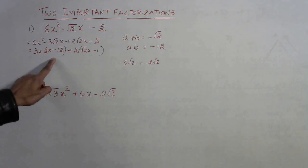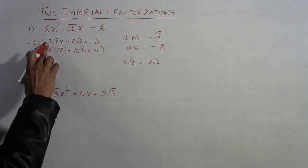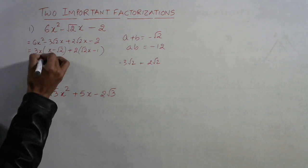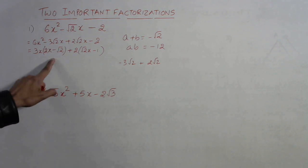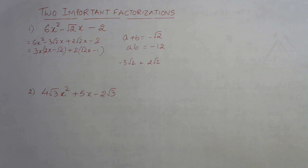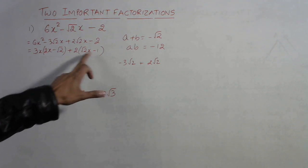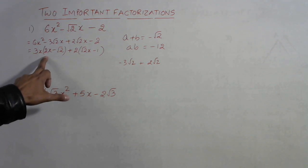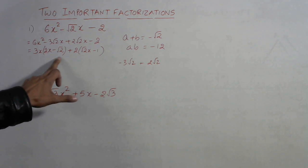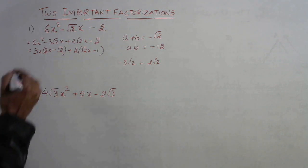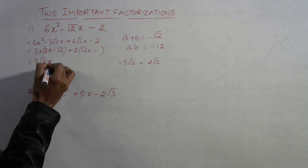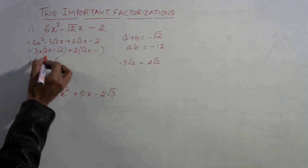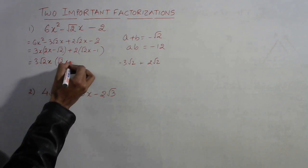And now you see in the brackets we have different terms and whenever we have different terms then we need to rectify this because our intention is to get the same term in the brackets. It happens only when we have left out a common factor. Now here we do not have a common factor but here 2 and root 2, 2 can further be split to root 2 into root 2. So another root 2 is common from this bracket which will come out like this, 3 root 2 x, and if you take root 2 out this will be root 2 x minus 1.